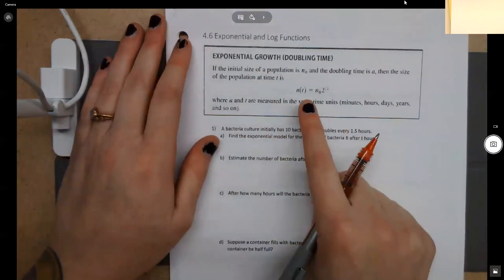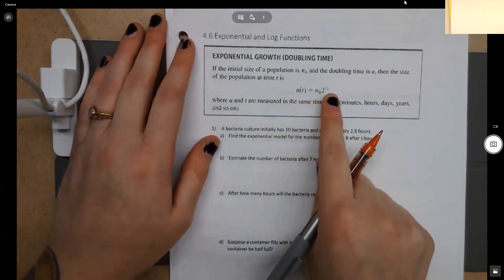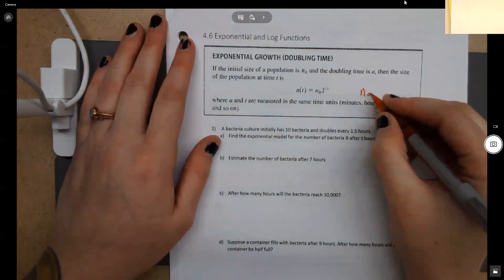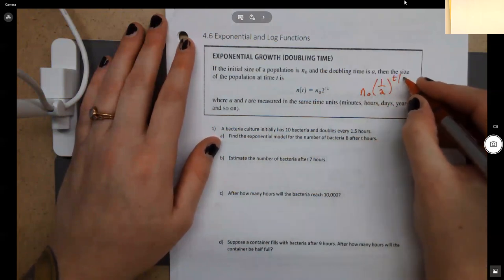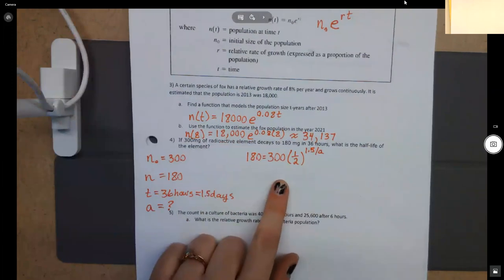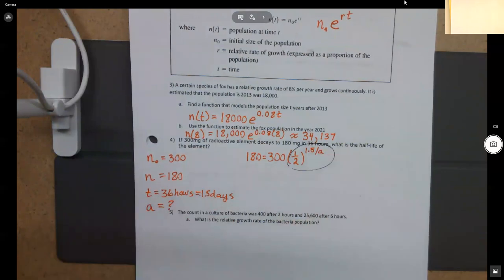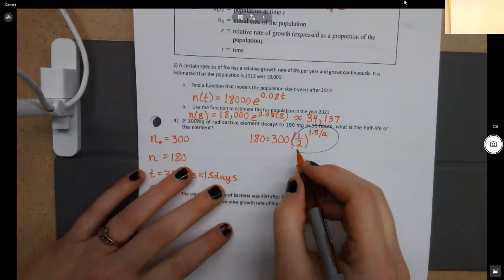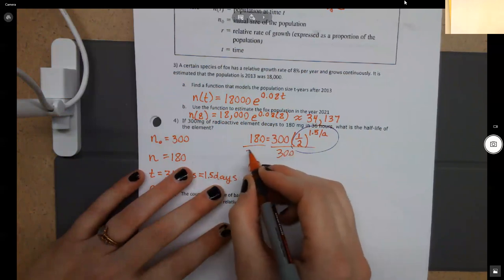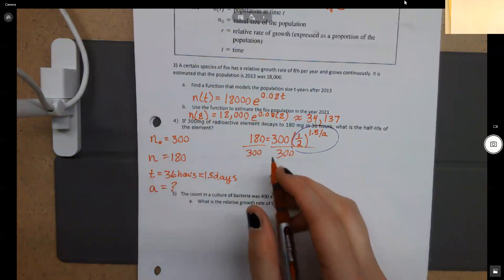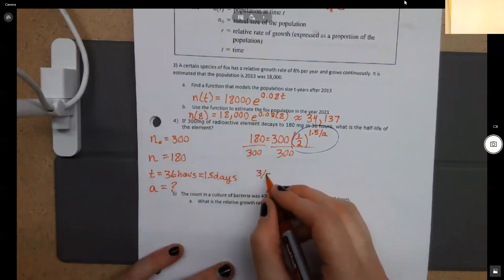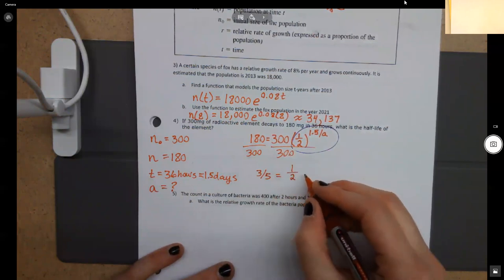So if you're looking at doubling time, then the formula is n naught 2 to the t over a. But if you're looking at half time, then it's, yeah, you're welcome. It's definitely worth remembering and writing down again, for sure. So if I want to solve this guy, the first thing I need to do is I need to work on getting that base by itself, which would be this guy right here. So I'm going to divide both sides by 300. So when I divide both sides by 300, what I'm going to end up getting is three-fifths equals one-half raised to the 1.5 over a.